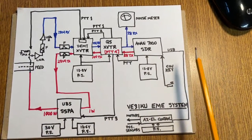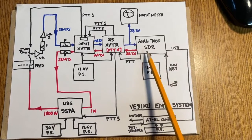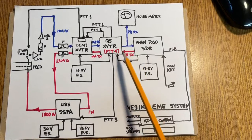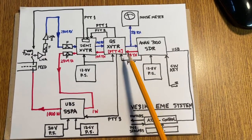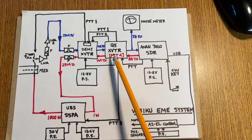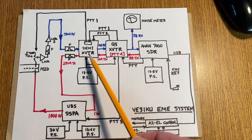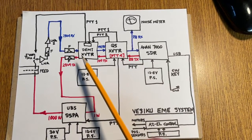Now we'll look at the transmit path. The ANAN 7000DLE provides a 28 MHz transmit signal from its transverter output port. Separate ports for receive and transmit, everything is separate. The Q5 signal transverter then generates a 144 MHz signal, and the Downeast Microwave transverter generates a 2304 MHz signal from that.